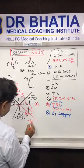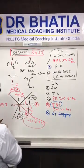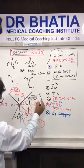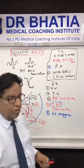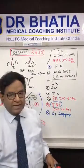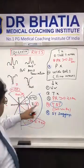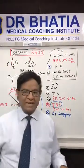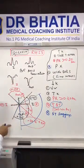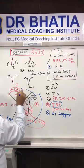What you need to remember is the normal axis, which is minus 30 to plus 90. Some books write 0 to 110, others write minus 30 to 100 — there is some variation across books. But by and large, minus 30 to plus 90 is the normal axis. Anything below that is left axis deviation, and anything above is right axis deviation.